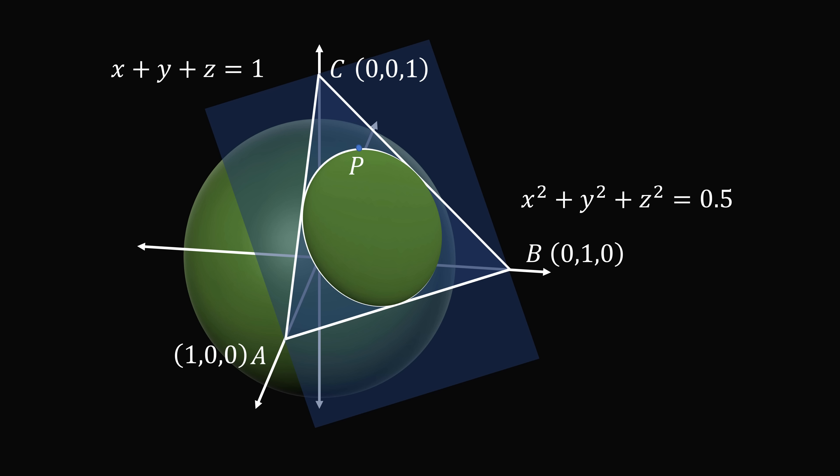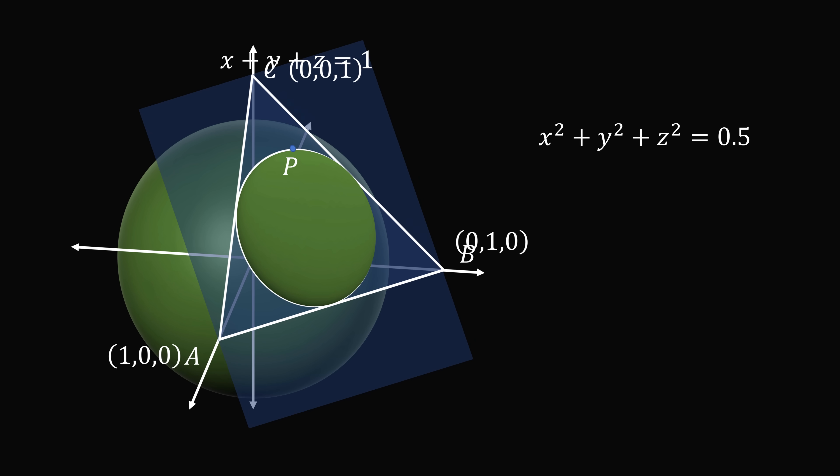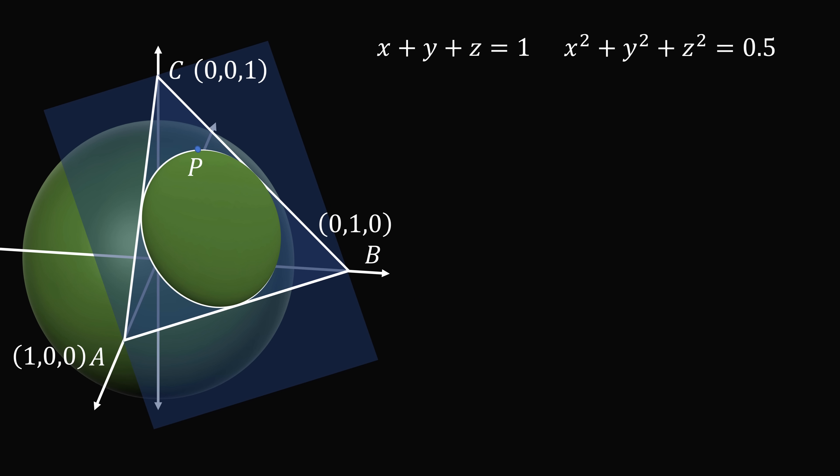So where do we go from here? We have the equation of the plane, the equation of the sphere, and the coordinates of A, B, and C. Our objective is to calculate AP squared plus BP squared plus CP squared. So let's let the point P have coordinates X, Y, and Z.